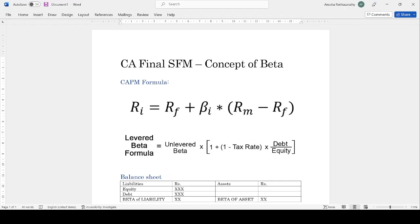Levered beta factors both the business risk and the financial risk. So we have the formula of levered beta as levered beta equals unlevered beta times 1 plus (1 minus tax rate) times debt by equity. We can also write it as unlevered beta times equity plus debt times (1 minus tax rate) divided by equity.